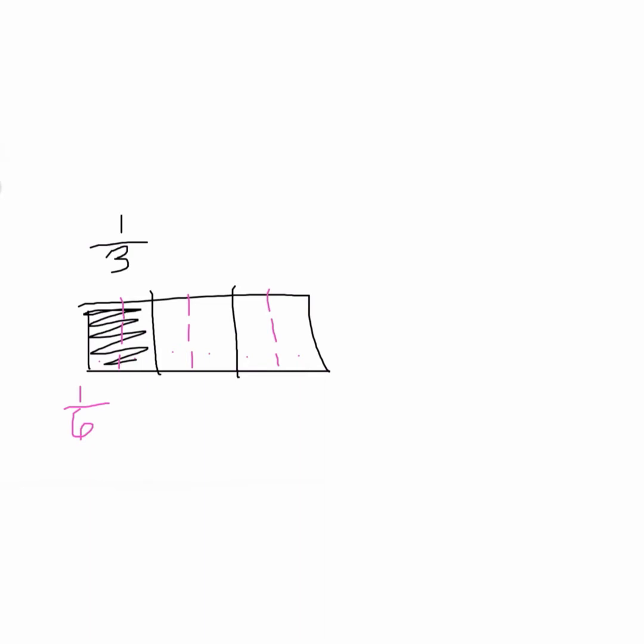So now let's write that as a number sentence. We can write one-third equals one-sixth plus one-sixth equals two-sixths.